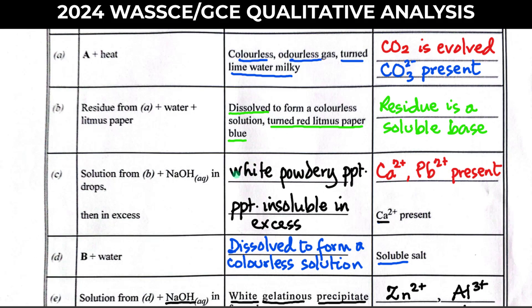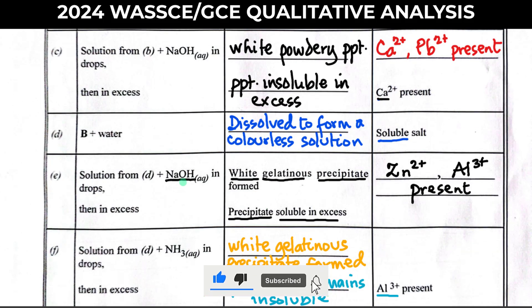In excess sodium hydroxide, this is where you separate calcium from lead(II). If it were lead(II) ion, the precipitate would dissolve in excess sodium hydroxide because lead(II) hydroxide is amphoteric. But calcium hydroxide is not amphoteric, so the precipitate remains insoluble in excess sodium hydroxide — which confirms calcium ion is present.